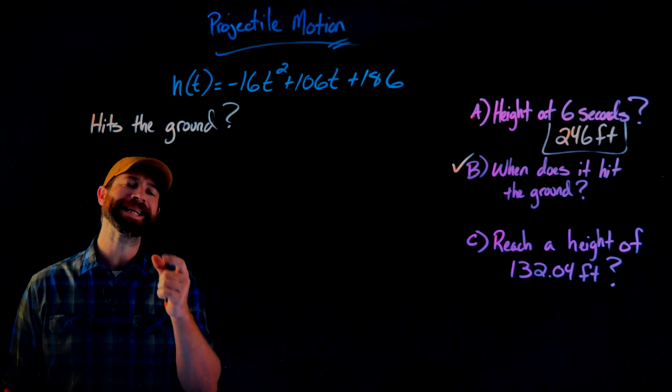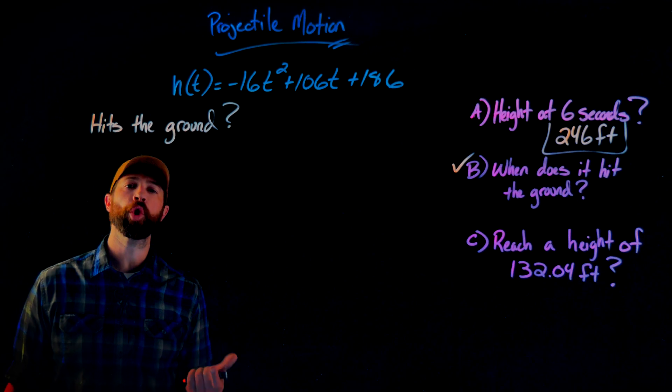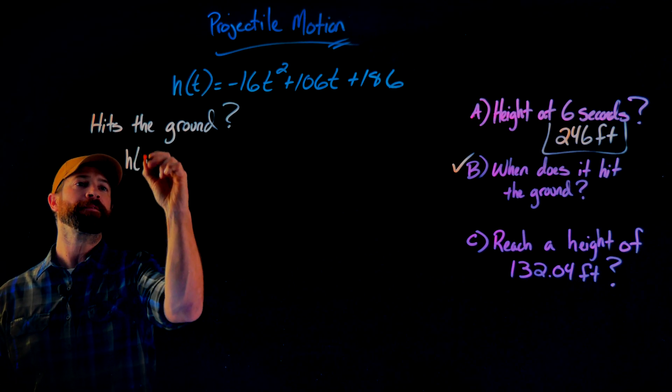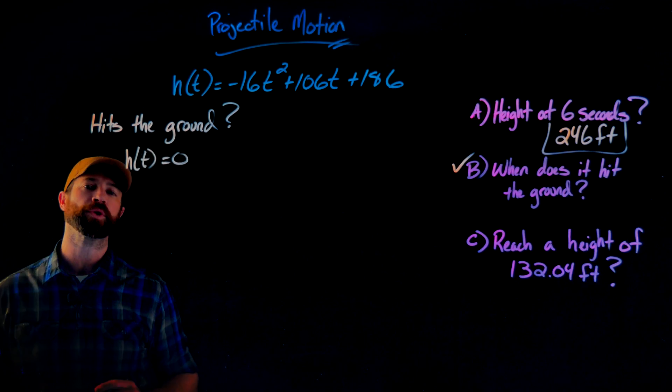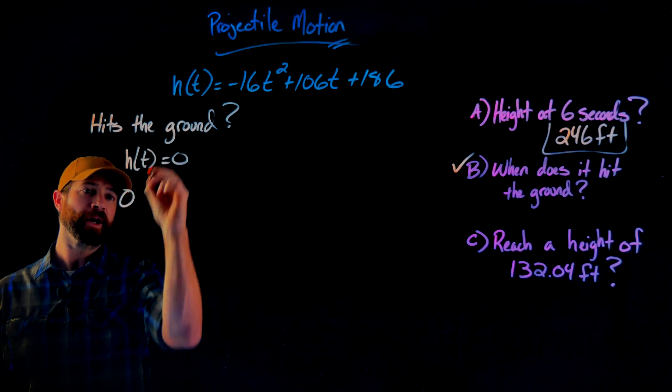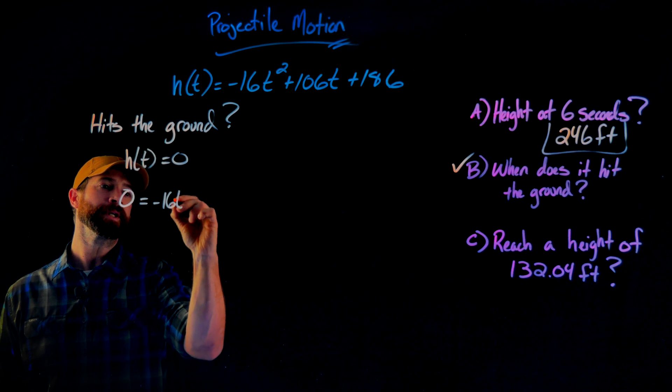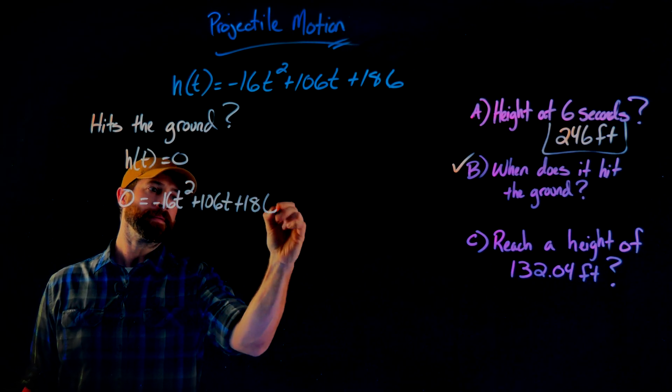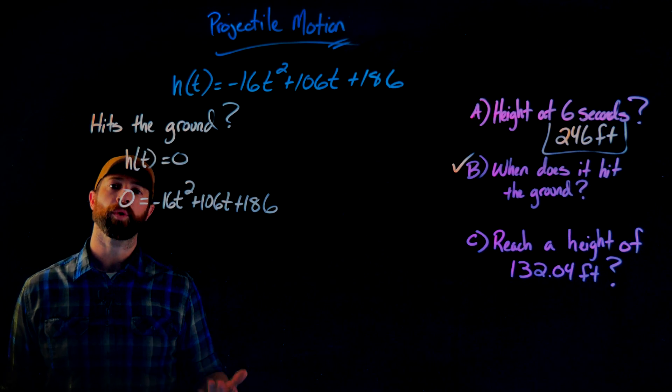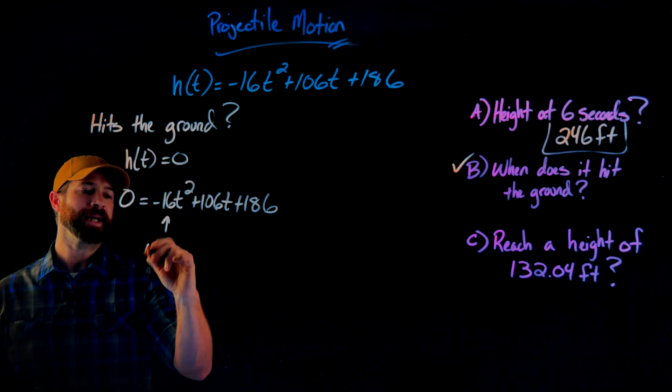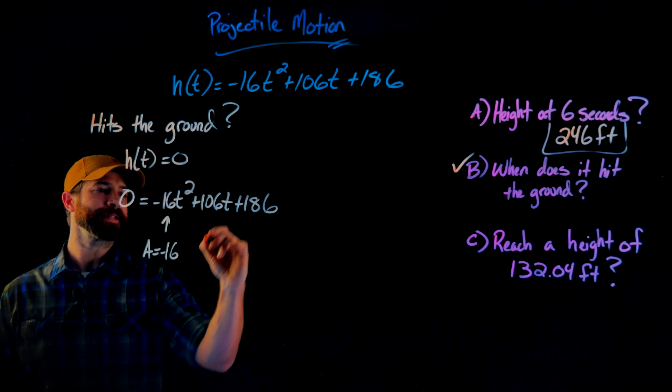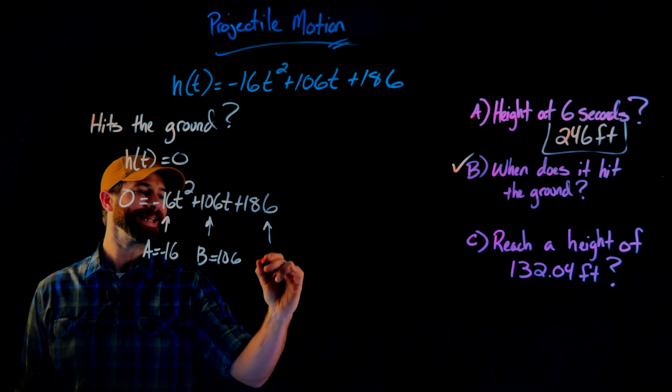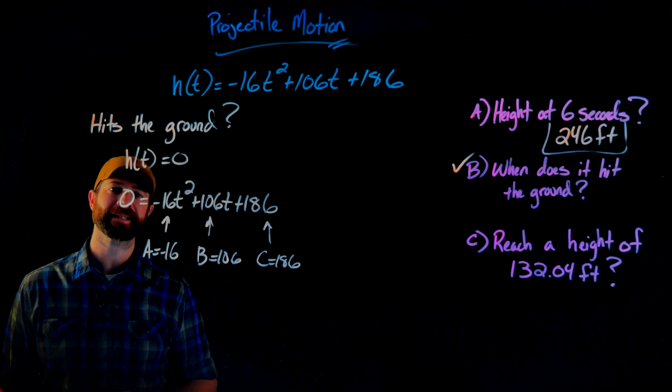To answer the second question of when it hits the ground, what we want to know is when the height of this object is zero. So we need to solve for when h of t equals zero. We'll just set our function equal to zero. I'll solve this with the quadratic formula, giving me an a value of negative 16, a b value of 106, and a c value of 186.